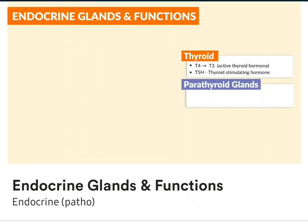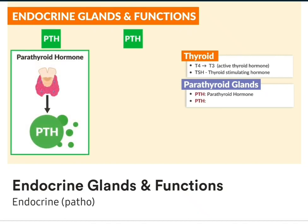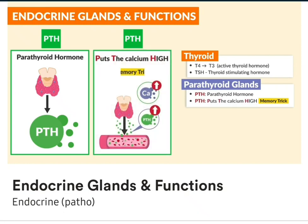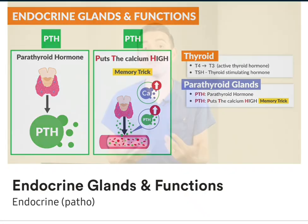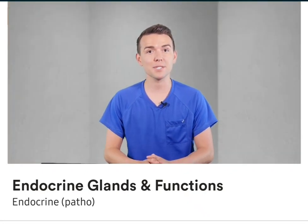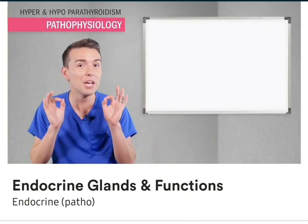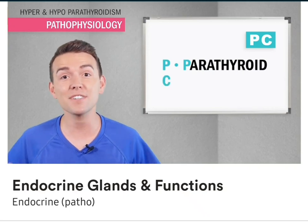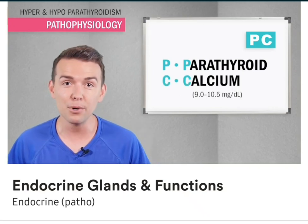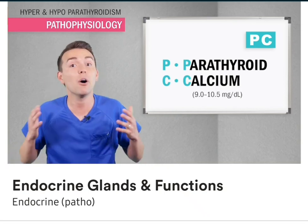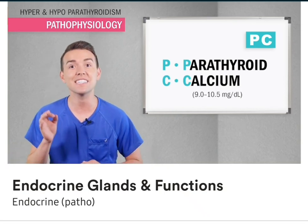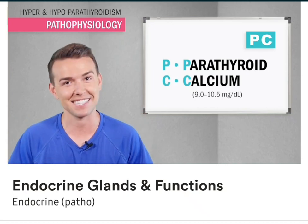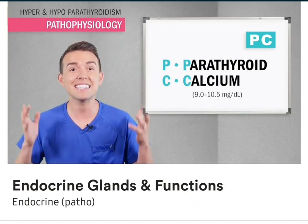Now for the parathyroid glands. The big one to know is PTH, the parathyroid hormone. Use the memory trick: PTH puts the calcium high inside the blood. The parathyroid glands are almost exclusively responsible for the regulation of blood calcium. Think PC, like a computer — P is for parathyroid and C is for calcium. The levels are typically 9.0 to 10.5. However, some books will say 8.5 to 10.0, so be sure to know what your textbook says.